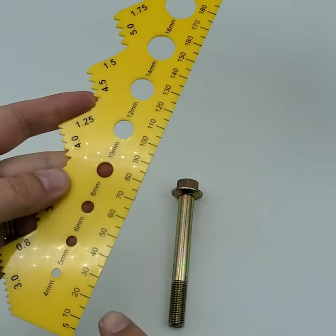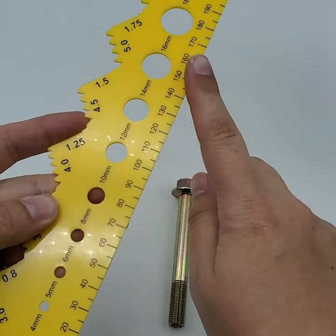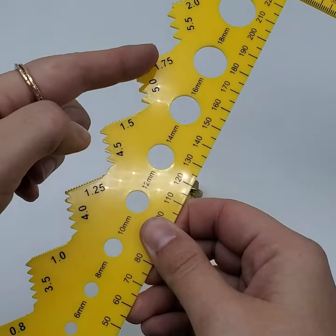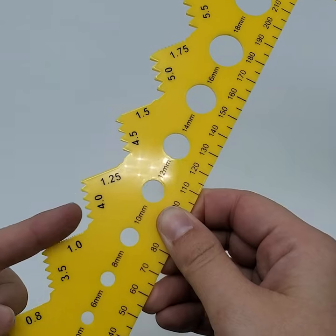This gauge has length in centimeters along this edge, diameters down the middle, and all the different pitches down this side.